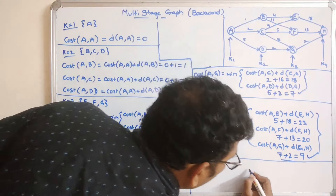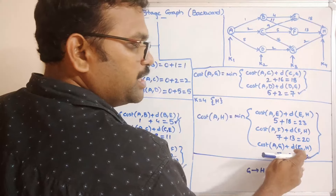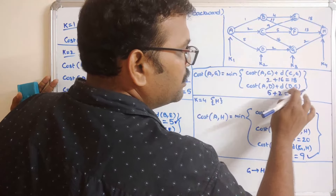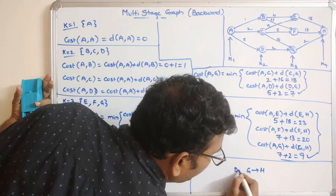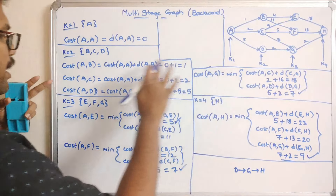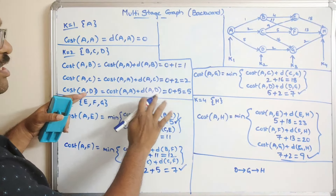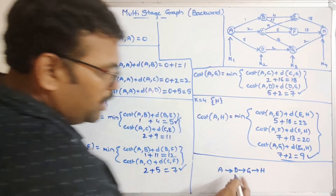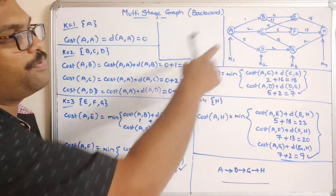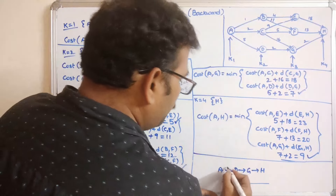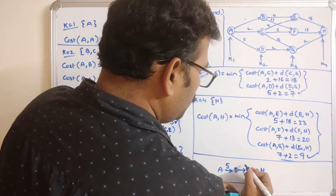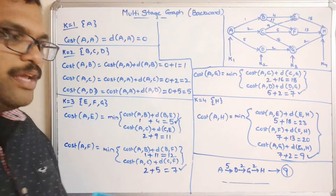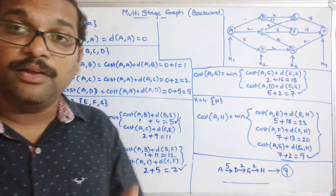Tracing back the shortest path: the last edge used was G to H (distance 2). For cost(A, G) we selected the path through D, so D to G (distance 2). And cost(A, D) came from A to D directly (distance 5). Therefore the shortest path is A → D → G → H with total distance 5 + 2 + 2 = 9, which is the shortest path from source to destination.